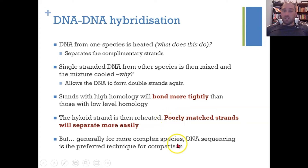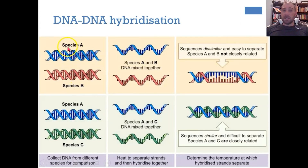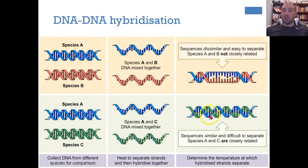This isn't a bad technique, but with cheaper DNA sequencing costs, DNA sequencing is now a much more preferred technique. For example, mixing species A and B DNA shows a poor match in some sections, requiring less heat to separate the strands. Species A and C, by contrast, bond much more tightly, requiring more heat energy to separate. This means species A and C share a much more recent common ancestor than species A and B.